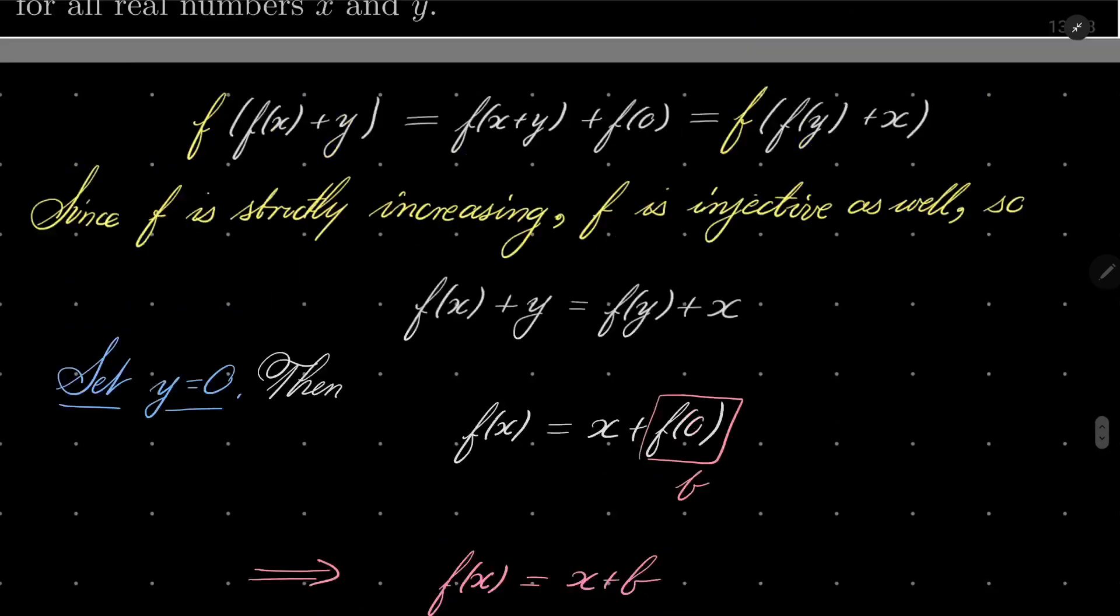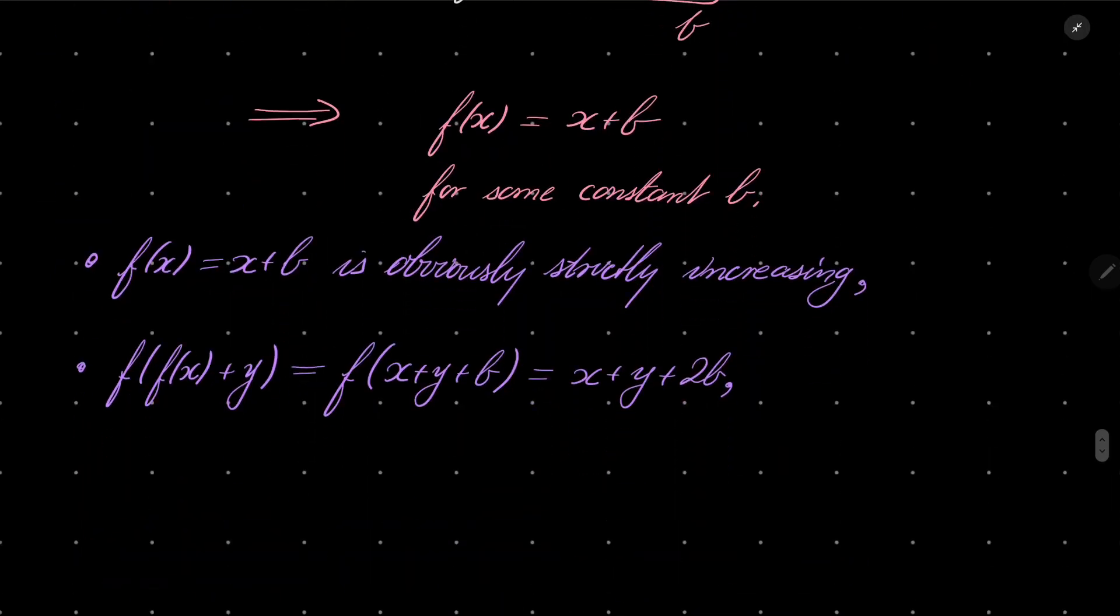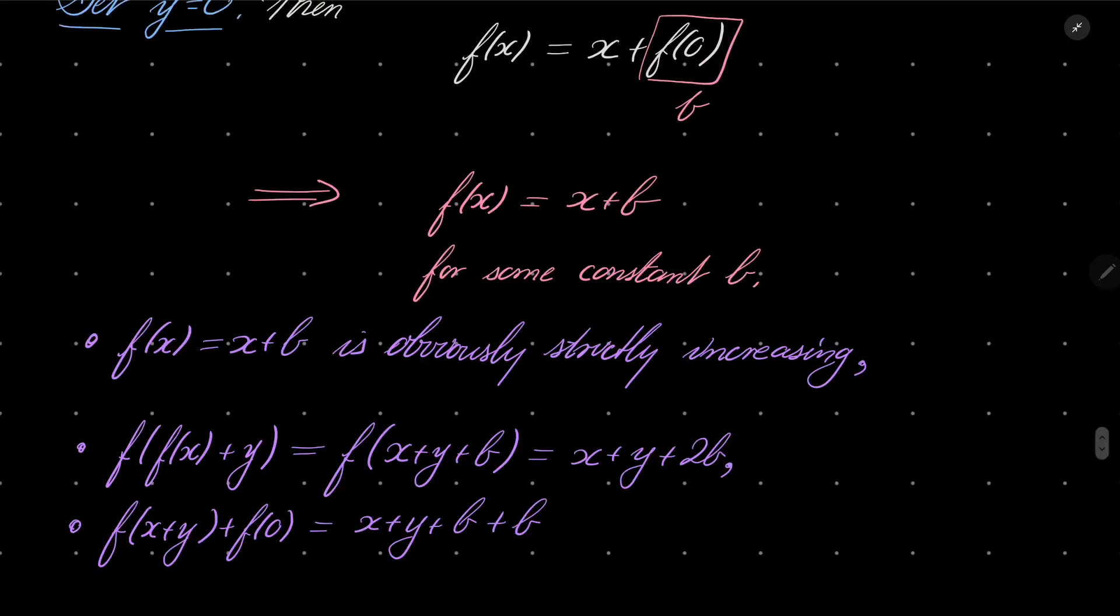And on the right hand side, we have f of x plus y plus f of 0. Well, f of x plus y is x plus y plus b. And what is f of 0? Well, f of 0 was defined to be this number b. So we have exactly the same.